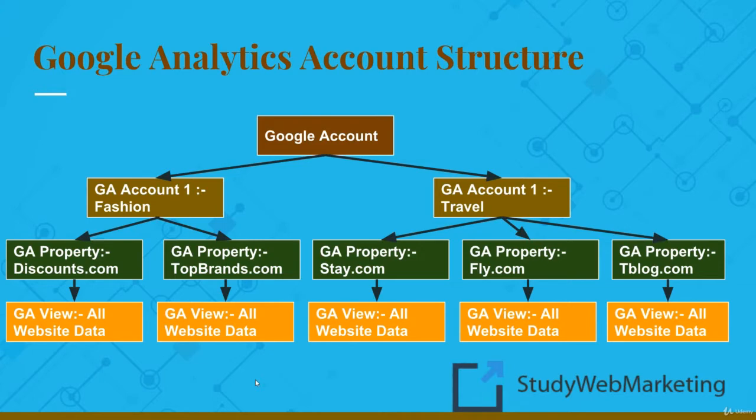We're going to start by looking at the hierarchy of a Google Analytics account, and for this purpose we are going to take an example of a company which owns two online business lines — first one being fashion and second one being travel.